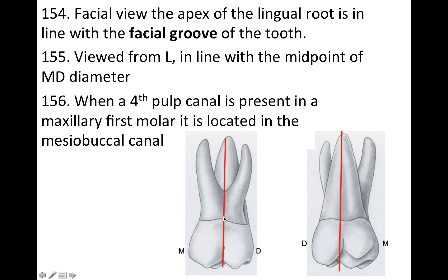From a facial view, the apex of the lingual root is in line with the facial groove of the tooth. When viewed from the lingual, the palatal root is in line with the midpoint of the mesial-distal diameter. And when a fourth pulp canal is present in a maxillary first molar, it's usually located in the mesial buccal canal.